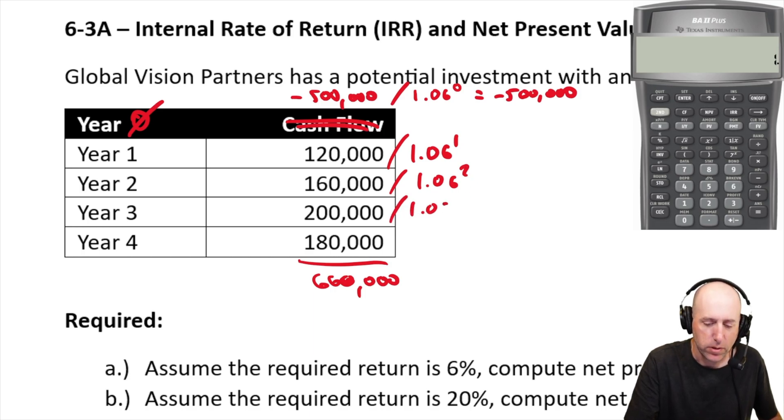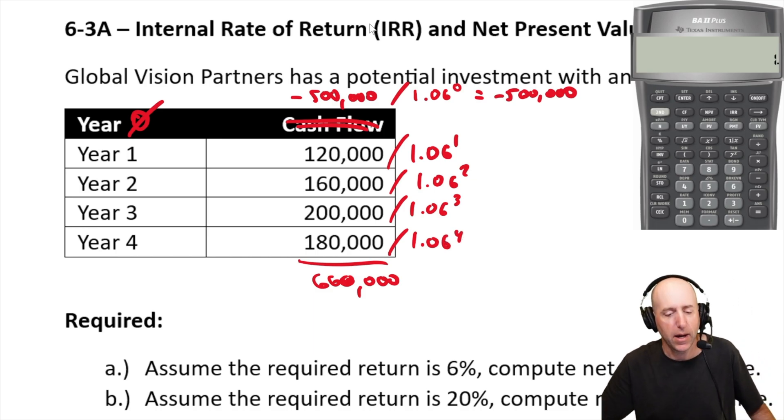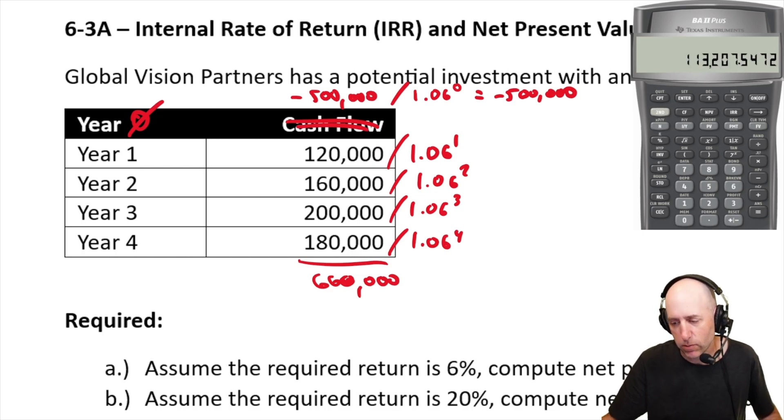Of course, the more years, the more the discount factor will be. Okay, so let's do 120 divided by 1.06 to the 1, 120 divided by 1.06 is 113,208.